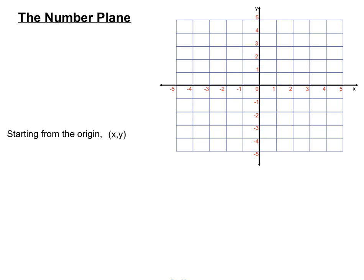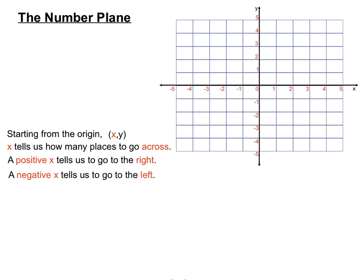So starting from the origin, depending on the x and y numbers that we have, the x value, that will be a number in a point, tells us how many places to go across. Now if the x is positive, it tells us to go to the right. If that first value in the brackets there is negative, it tells us to go to the left.